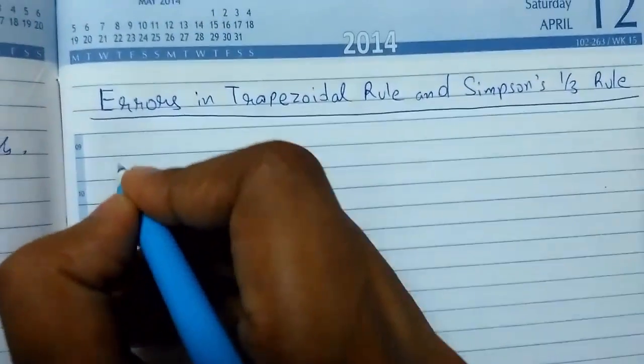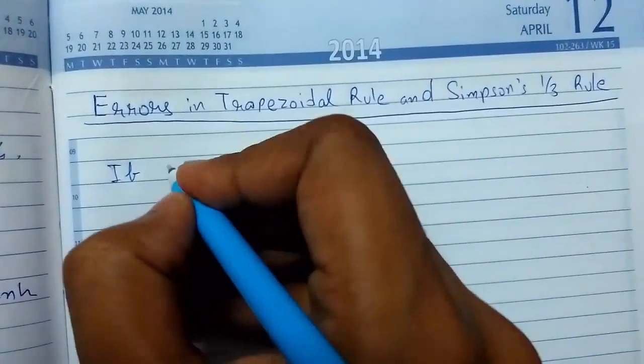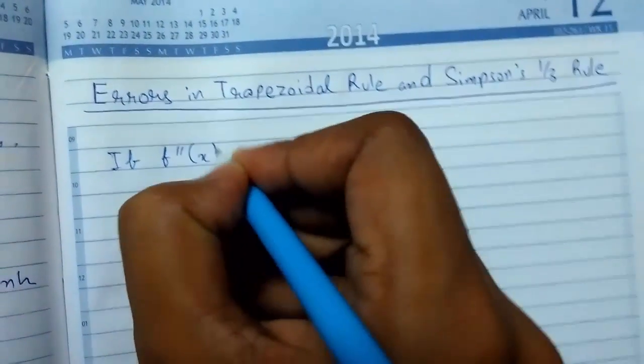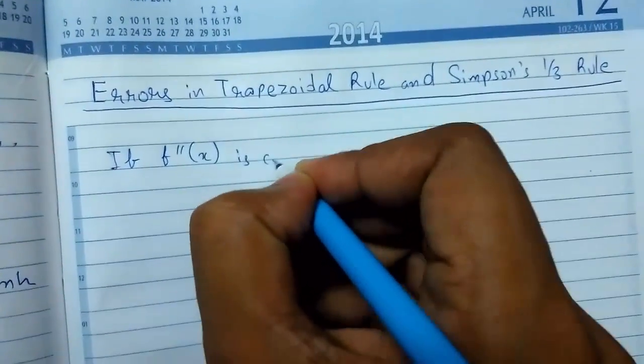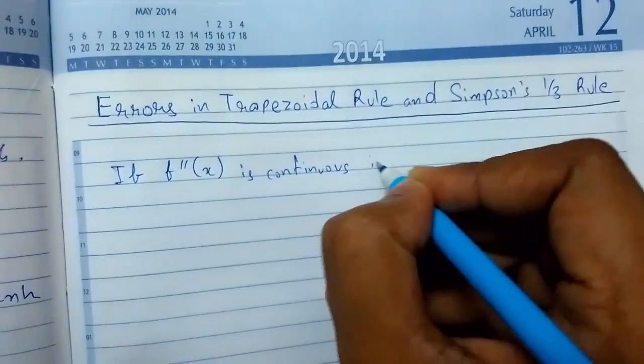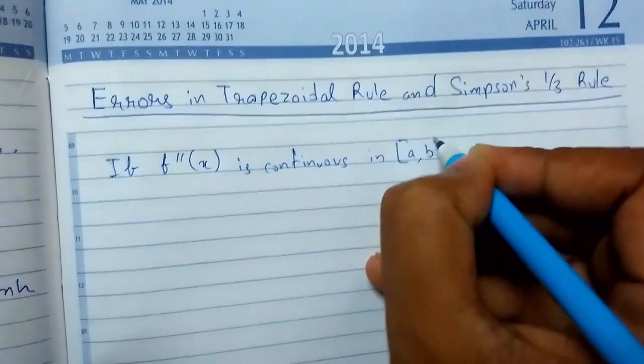If the double derivative of f(x) is continuous in the interval [a,b],